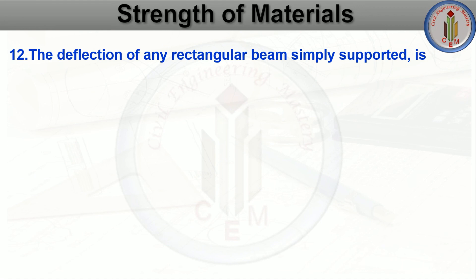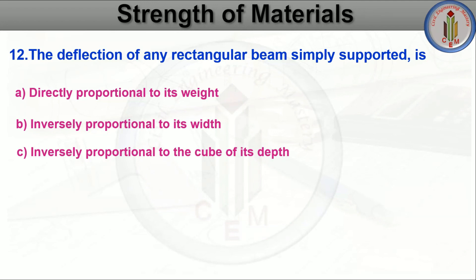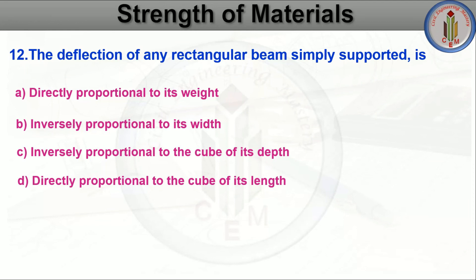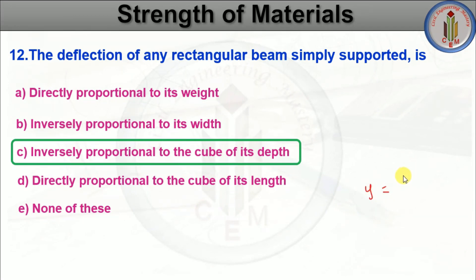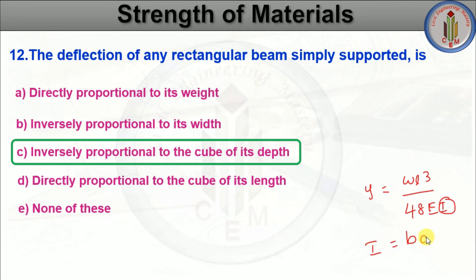The deflection of any rectangular beam that is simply supported is — directly proportional to its weight, inversely proportional to its width, inversely proportional to the cube of its depth, directly proportional to the cube of its length, or none of these. The answer is inversely proportional to the cube of its depth. From the deflection formula WL³/48EI and I = BD³/12, deflection is inversely proportional to the cube of its depth.